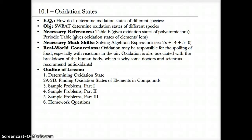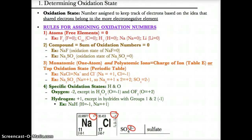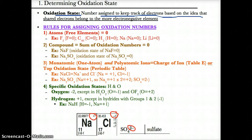10.1 oxidation states. Let's first discuss how to determine oxidation states. Oxidation states, or oxidation numbers, are numbers assigned to keep track of electrons based on the idea that shared electrons always belong to the more electronegative element. More electronegative elements attract electrons more, so they tend to be negative, while less electronegative elements tend to be positive.